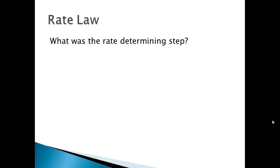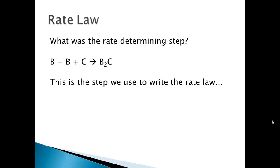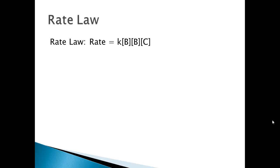Now let's find the rate law. The rate determining step is the slow step — the bottleneck. Using the format rate = K × [reactants], and looking at the slow step which involves B, B, and C as reactants, we get: rate = K[B][B][C], which simplifies to rate = K[B]²[C].